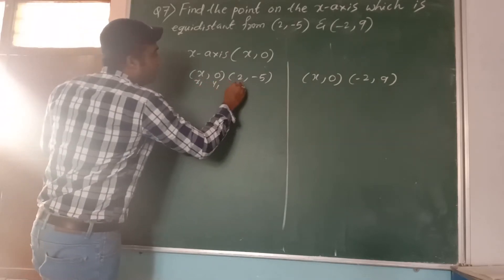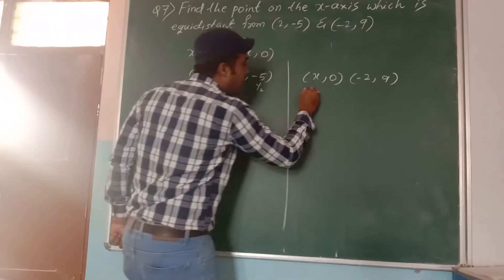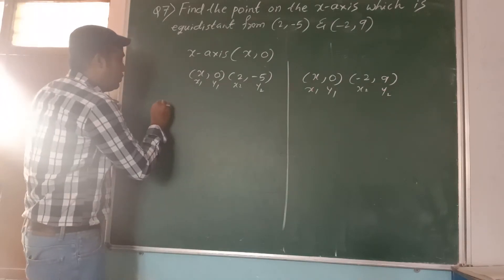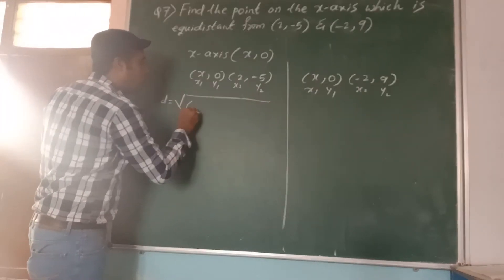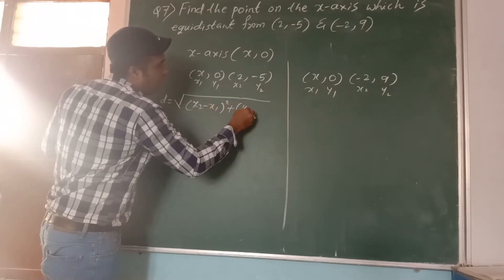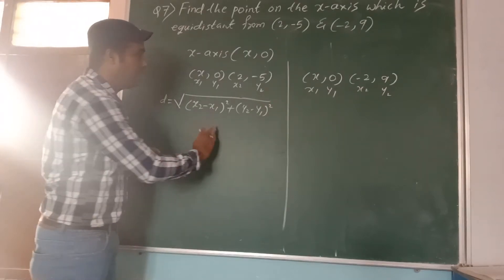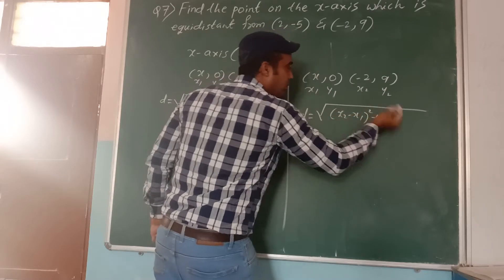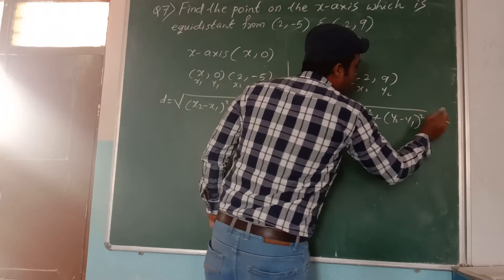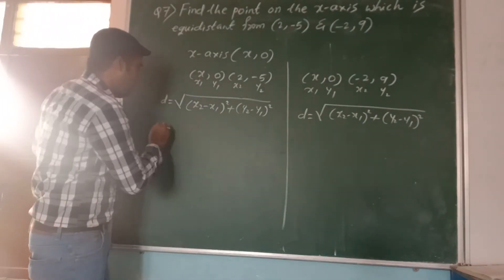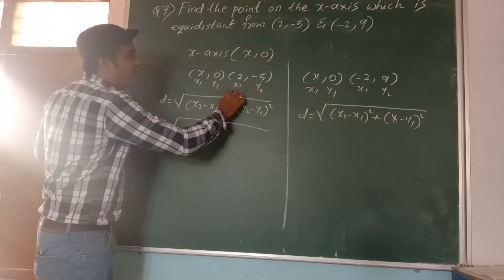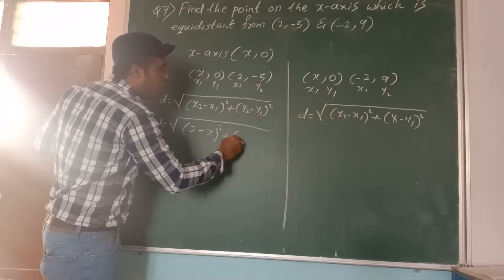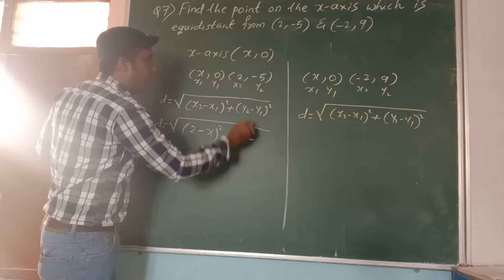Label the first set: x1, y1 and x2, y2. Here also x1, y1 and x2, y2. Now apply the distance formula: D equals square root of (x2 minus x1) whole square plus (y2 minus y1) whole square. So D equals square root of (2 minus x) whole square plus (minus 5 minus 0) whole square. Therefore D equals square root of (2 minus x) whole square plus (minus 5) whole square.